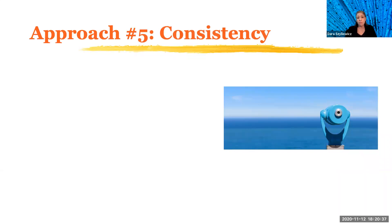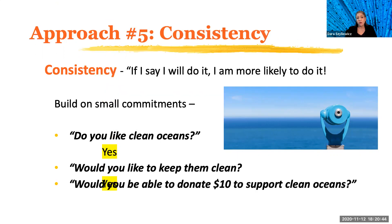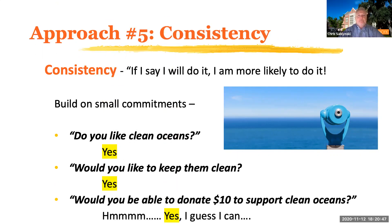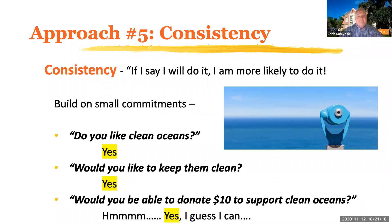Approach number five is consistency. We like people who do what they say they'll do, and we particularly like it when people build on small commitments. If you ask your coworker to do something, they say they will, and then they don't do it — one time, maybe okay. Two times, you're not going to go to that coworker. We want people to be consistent and come through on what they said they'll do.